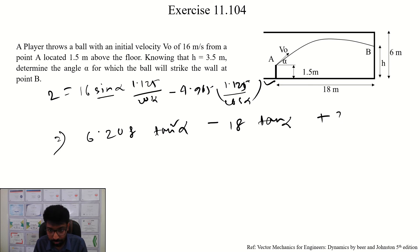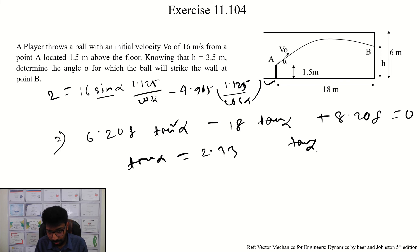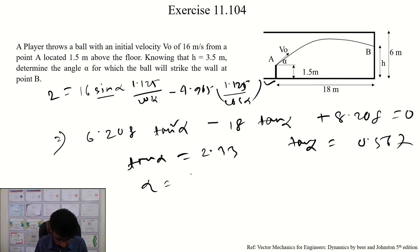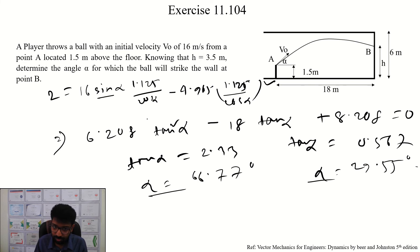The equation in tan alpha plus 8.208 equals 0. Solving, the answer is equal to 2.33, and the equation gives 0.567. The alpha answers are 56.77 degrees and 29.55 degrees. So we will see alpha values, which are these two solutions.